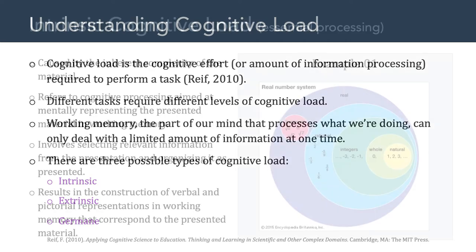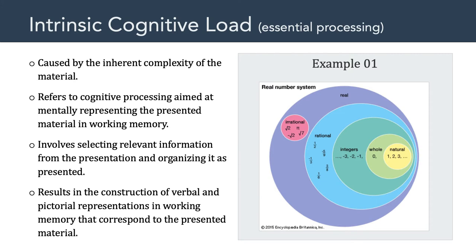The first type, intrinsic cognitive load, is caused by the inherent complexity of the material you're asking someone to learn, because people have to mentally represent the presented material in their working memory. If that material is more complex, the intrinsic cognitive load increases. Intrinsic cognitive load involves selecting relevant information from a presentation and organizing it as it's presented. For those familiar with Mayer's multimedia learning theory, intrinsic cognitive load is related to essential processing — the cognitive processing that has to happen in order for someone to make sense of a given presentation.